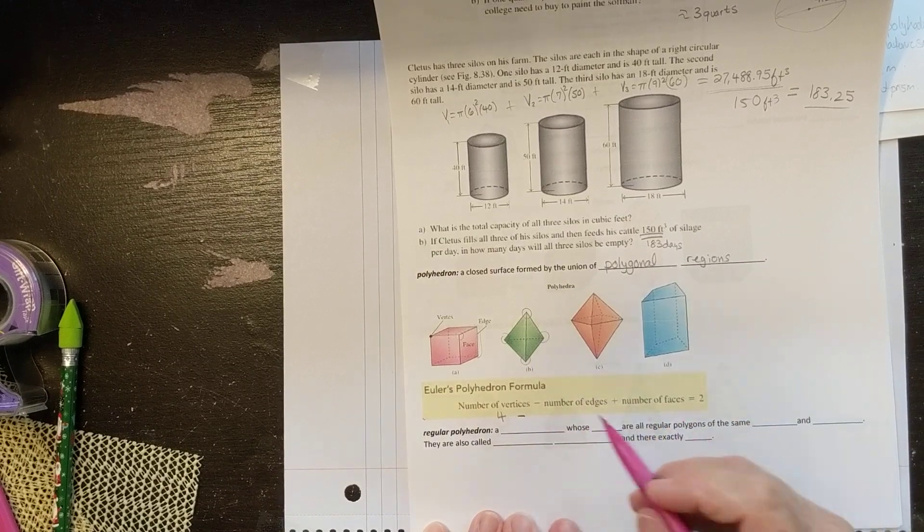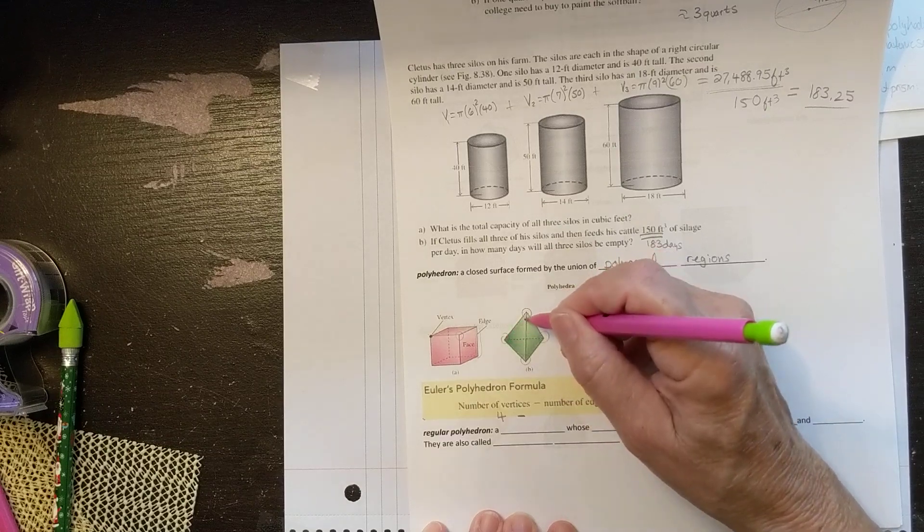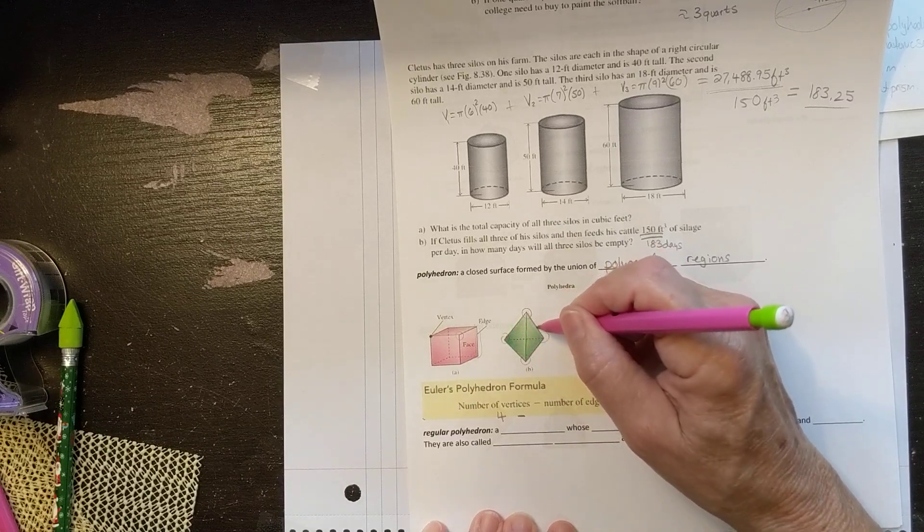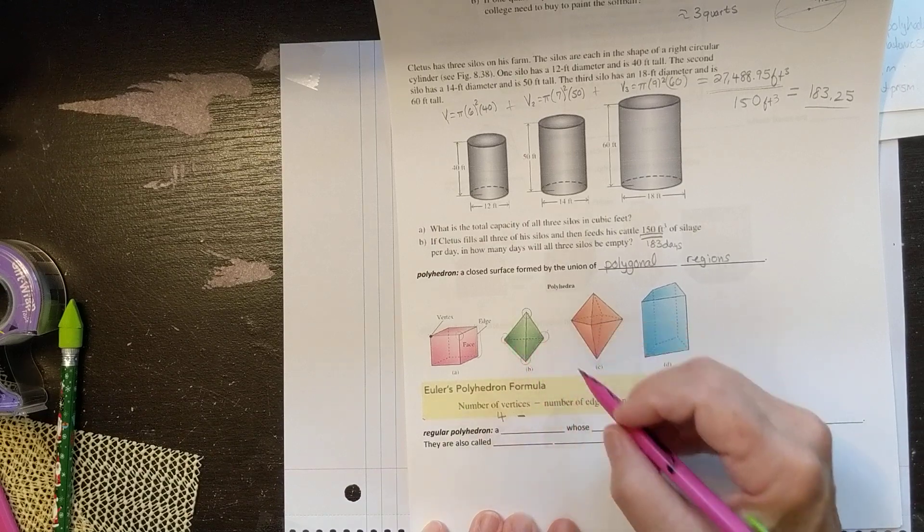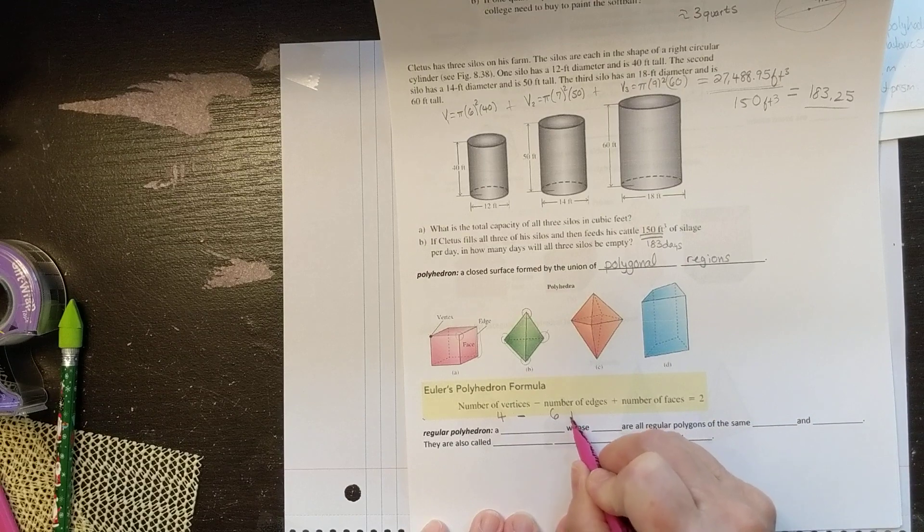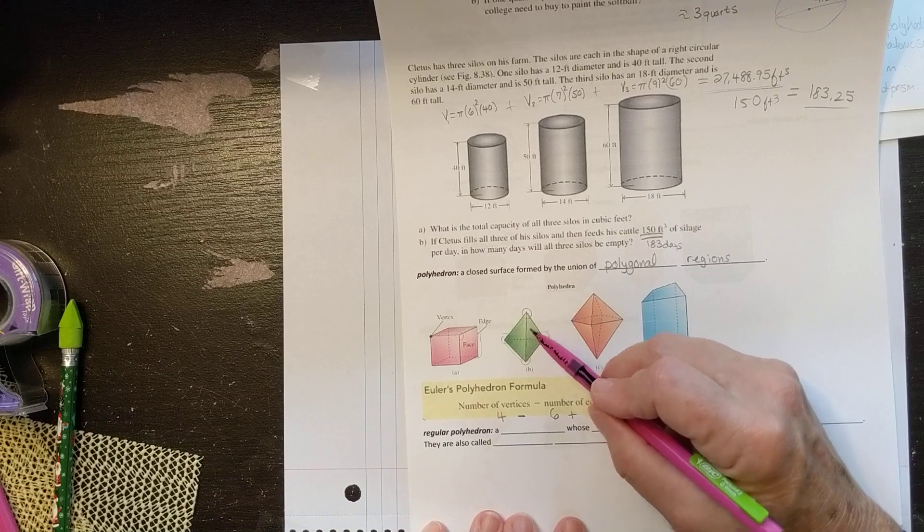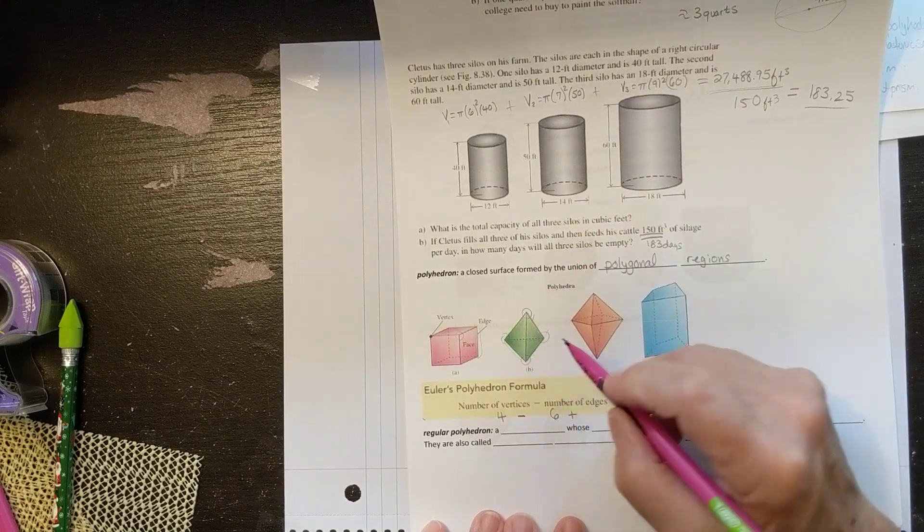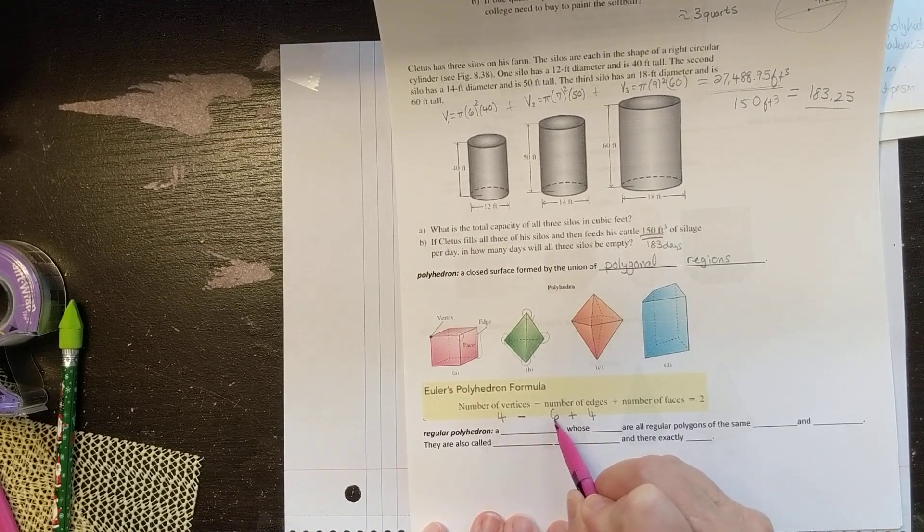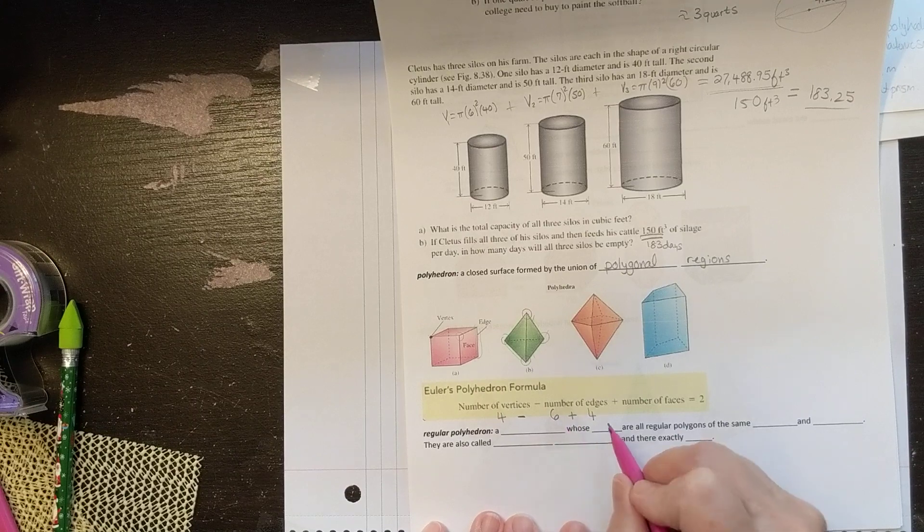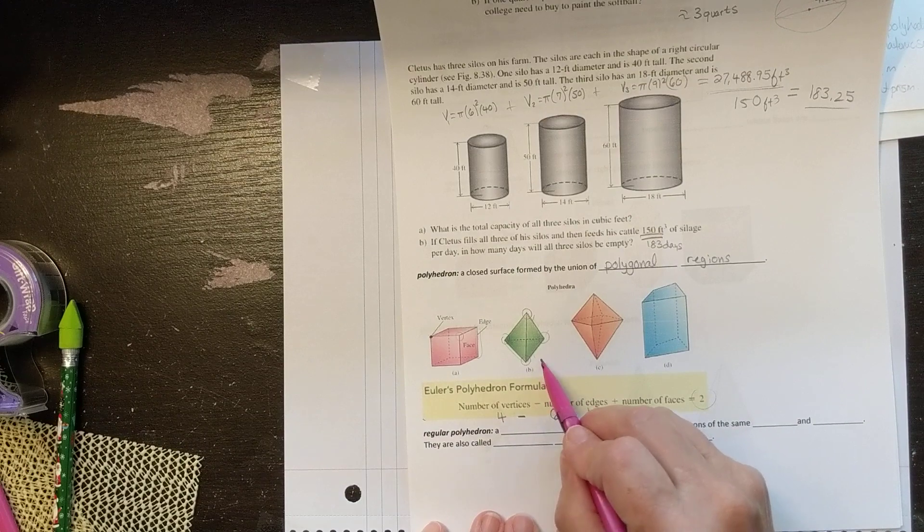Now we're going to subtract the number of edges. Edges are where the seams come together. So there's one, two, three, and on the bottom, four, five, six. There's six of these. And then we're going to add the number of faces. So there's one side, here's the second face, there's one back here I can't see, and there's one on the bottom. So there's four of these. So four minus six is negative two. Negative two plus four is two. This is always going to be true.